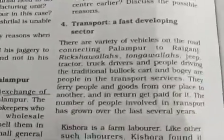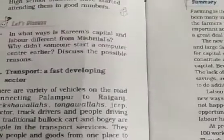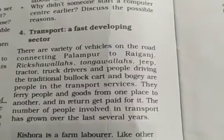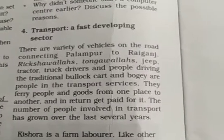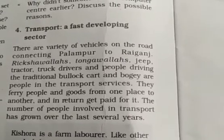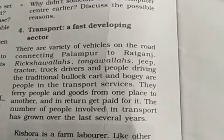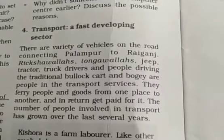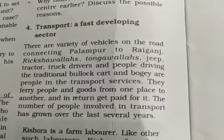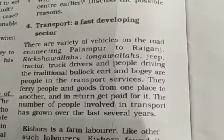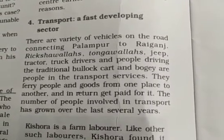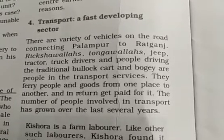The next important non-farm activity is transport. There are a variety of vehicles on the road connecting Palampur to Raiganj — rickshaw-walas, tonga-walas, jeep, tractor, trucks, and people driving traditional bullock carts and buggies are all part of the transport service. They ferry people and goods from one place to another and in return get paid for it.